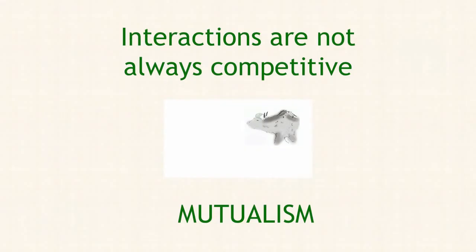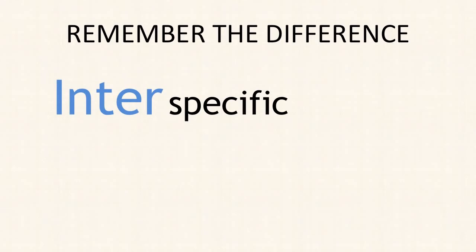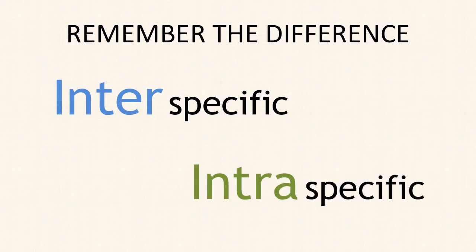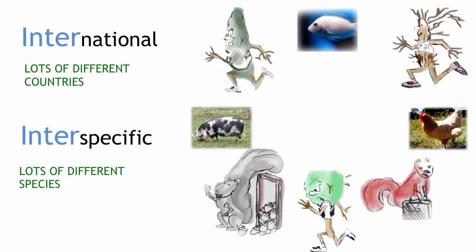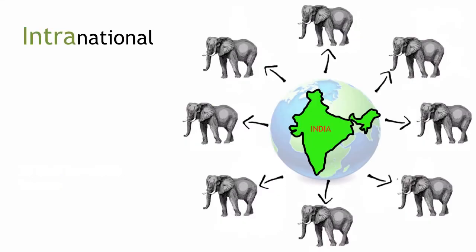Not all of these interactions have to be competitive — you'll learn this in the video on mutualism. To remember the difference between interspecific and intraspecific interactions: remember that international means between lots of different countries, so interspecific interactions are between lots of different species. Intranational would be within one nation, so intraspecific interactions involve members of one species.